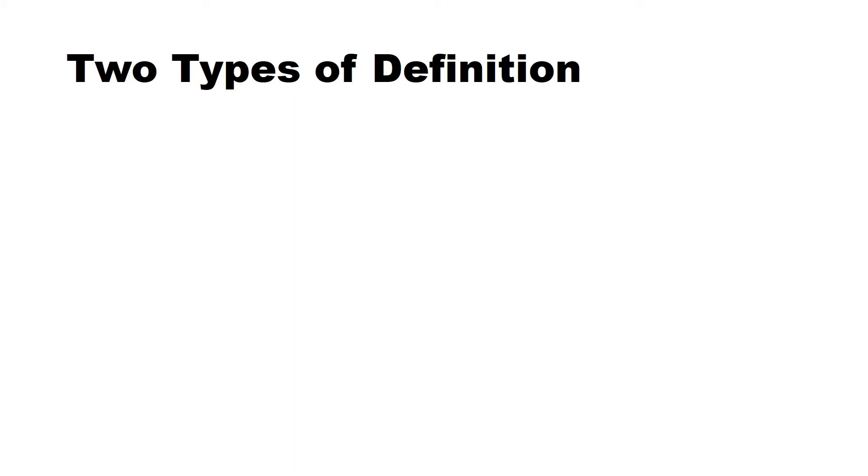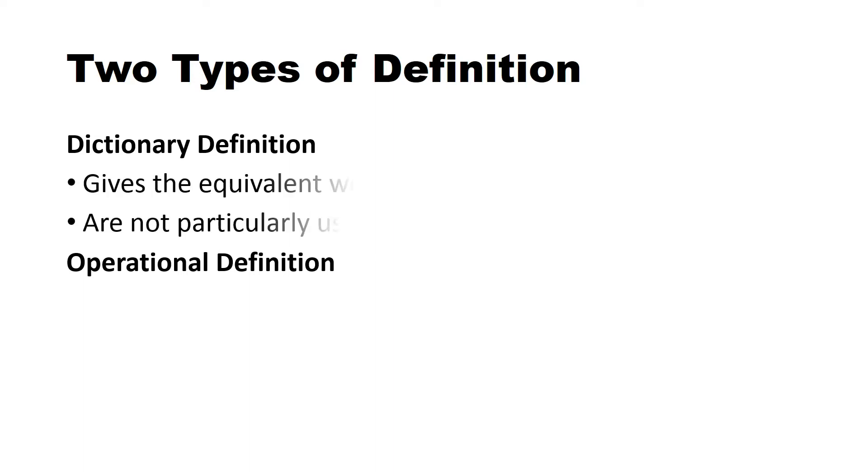This will lead us to these two types of definition na mahalagang malaman natin in relation to construct. Let me first define it so that I can explain it to you. Una, we have two types of definition: Dictionary definition and operational definition. Anong ibig sabihin kapag sinabing dictionary definition?